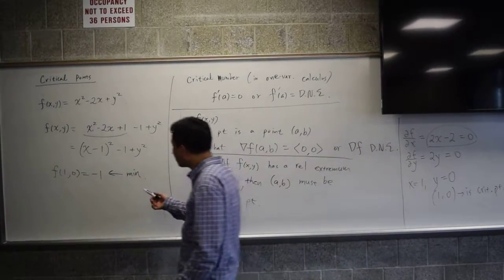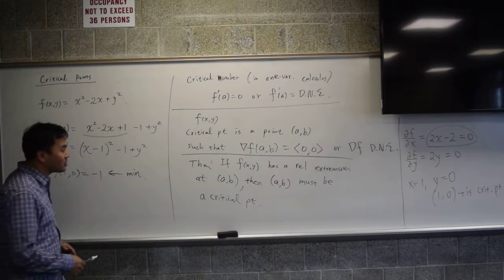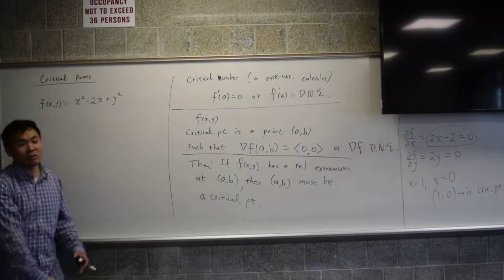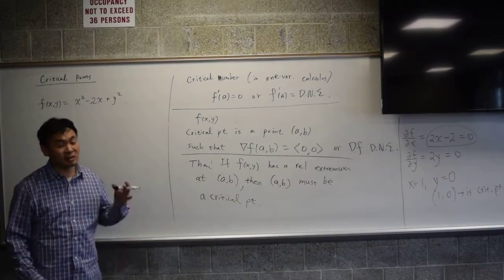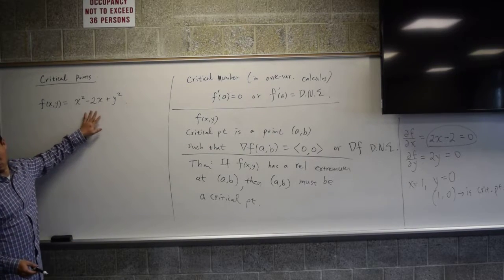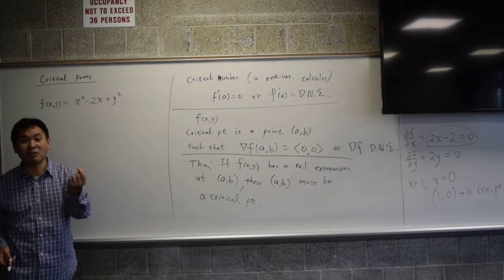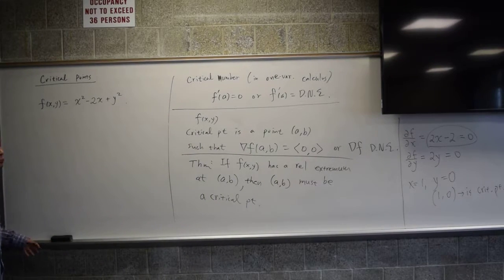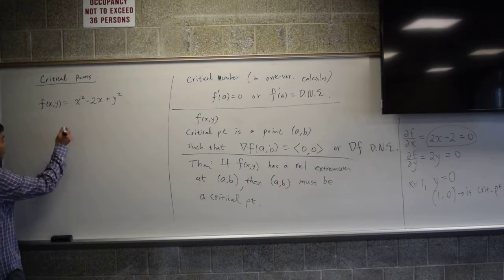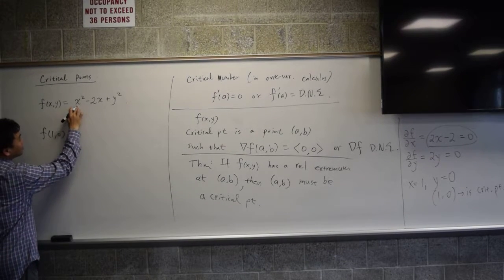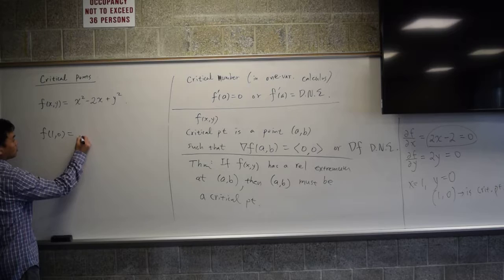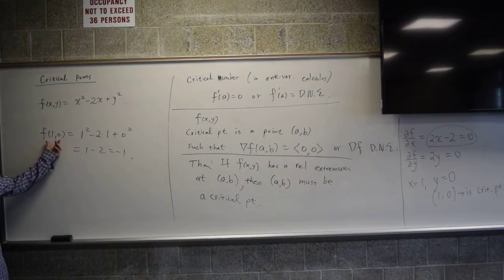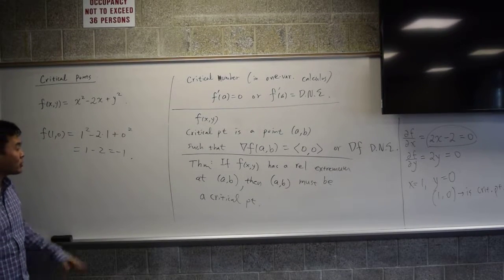We found the point without having to do algebra. Since this is a quadratic polynomial shaped like a paraboloid, the relative minimum must also be the global minimum. Evaluating f(1, 0): 1² - 2(1) + 0² = 1 - 2 = -1. So the minimum value is -1 at (1, 0). That's what critical points are.